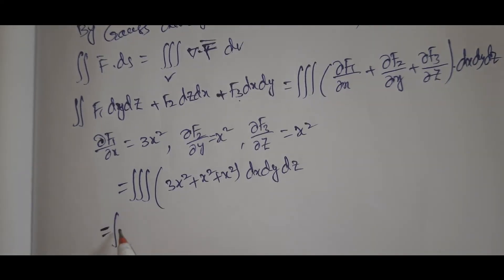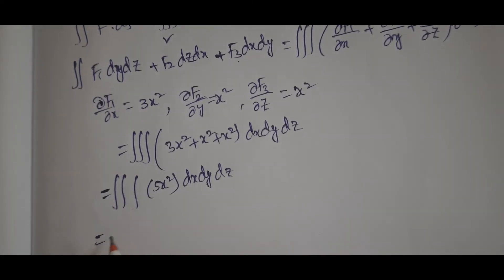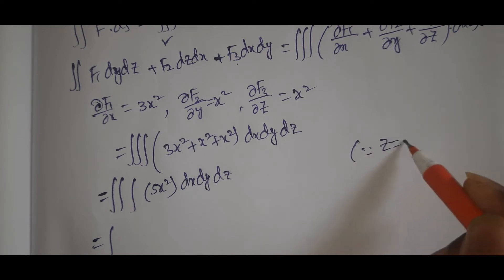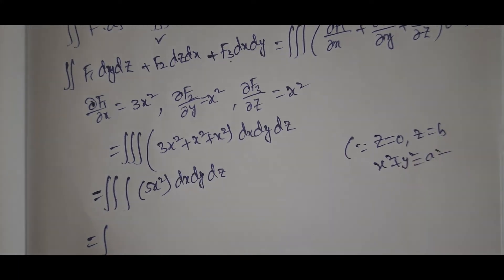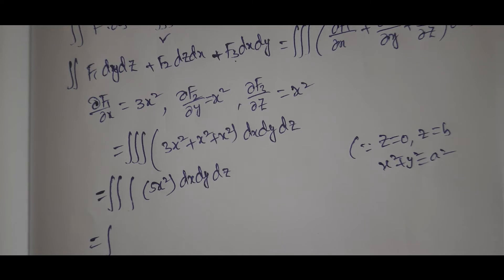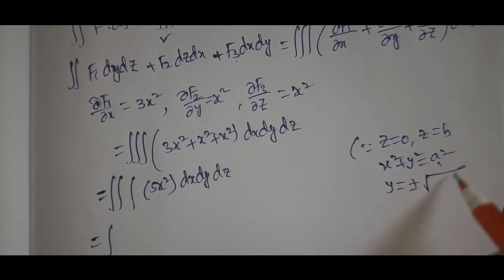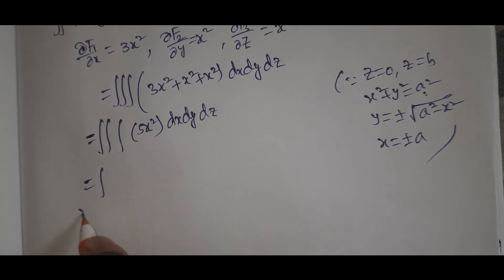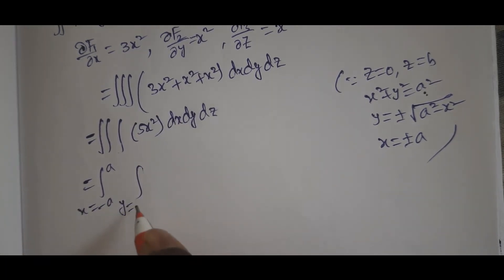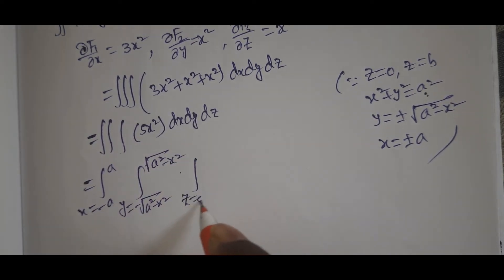The limits are: z from 0 to b, and x² + y² = a² gives y from −√(a² − x²) to +√(a² − x²), and x from −a to a. So the integral becomes: x = −a to a, y = −√(a² − x²) to √(a² − x²), z = 0 to b, of 5x² dz dy dx.